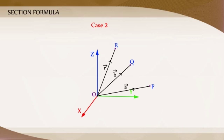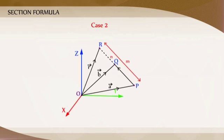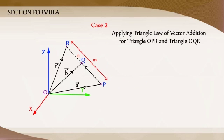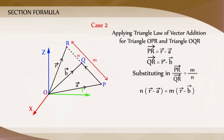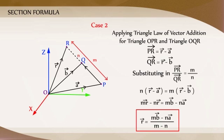Case 2: Let R divide the line joining the points P and Q in the ratio M is to N externally. Applying the triangle law of vector addition for the triangles OPR and OQR, we get PR vector is equal to R vector minus A vector, and QR vector is equal to R vector minus B vector. Substituting these values in vector PR by vector QR equals M by N and simplifying, we get R vector is equal to M times B vector minus N times A vector divided by M minus N.